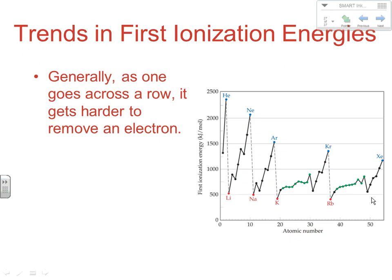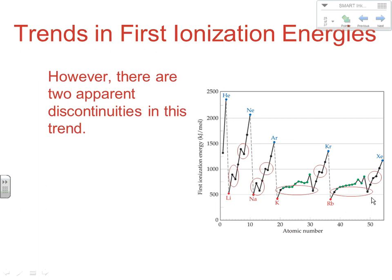There are some anomalies, and they seem to be happening in a very predictable way. This is something you should understand in case you're asked about it in an FRQ question on the AP test. There's a set of anomalies happening here, here, and here — predictable anomalies. Something must be happening consistently in those same spots within these periods for there to be a discontinuity. Why is it dropping in those places? It's for a very predictable reason. When you go from 2A to 3A — from beryllium to boron or magnesium to aluminum — you're going from an S orbital to a P orbital.